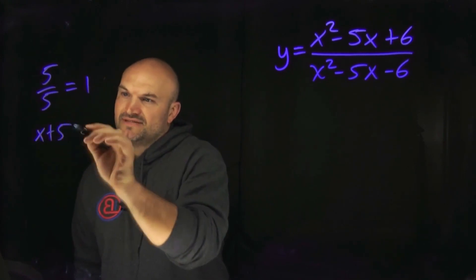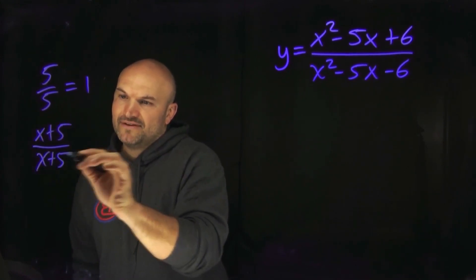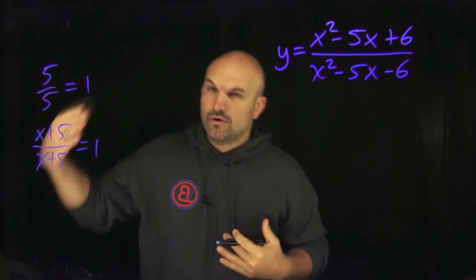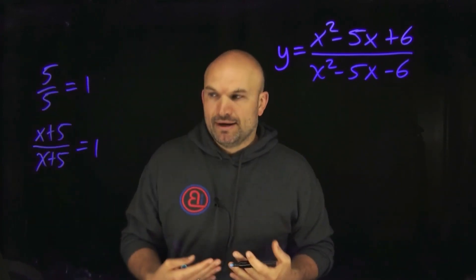If I had an x plus five divided by an x plus five, that's also equal to one. So anything divided by itself, even if it's a number or an expression, that's always going to equal one.